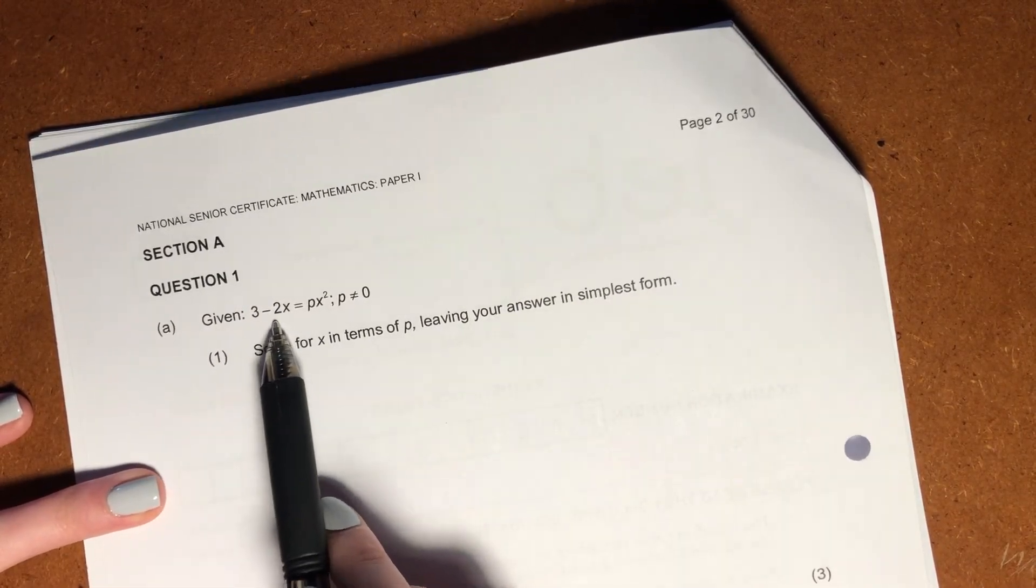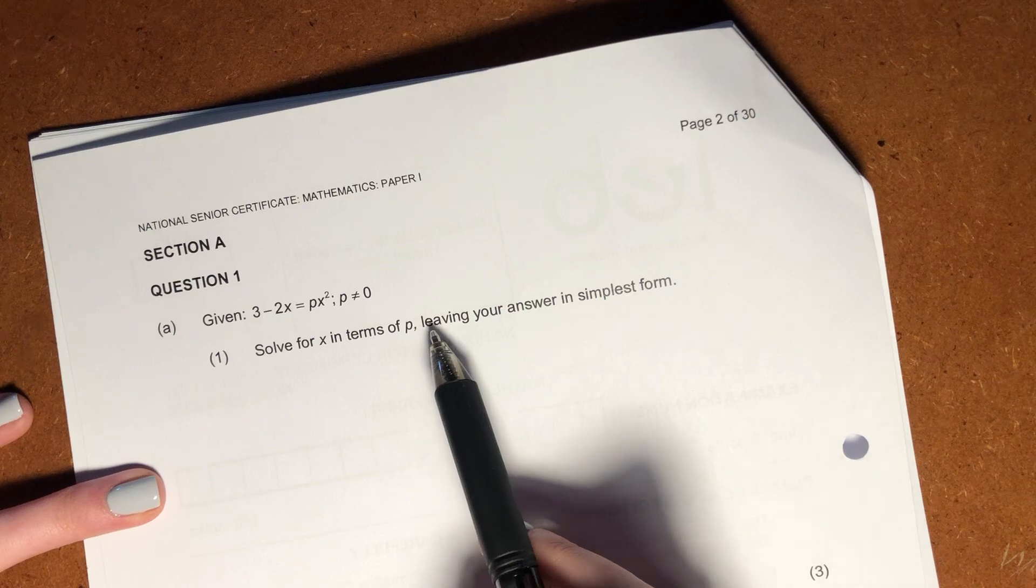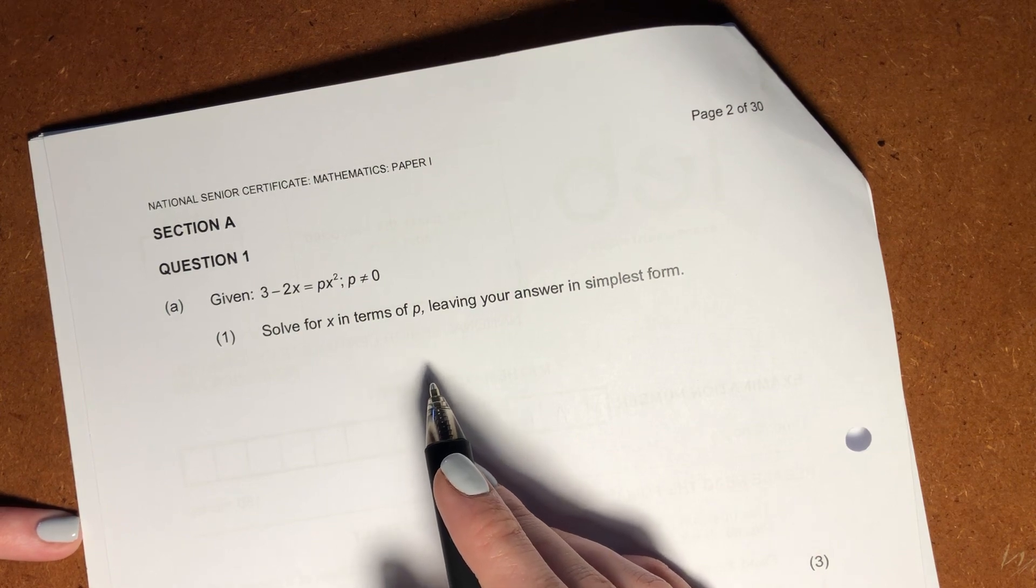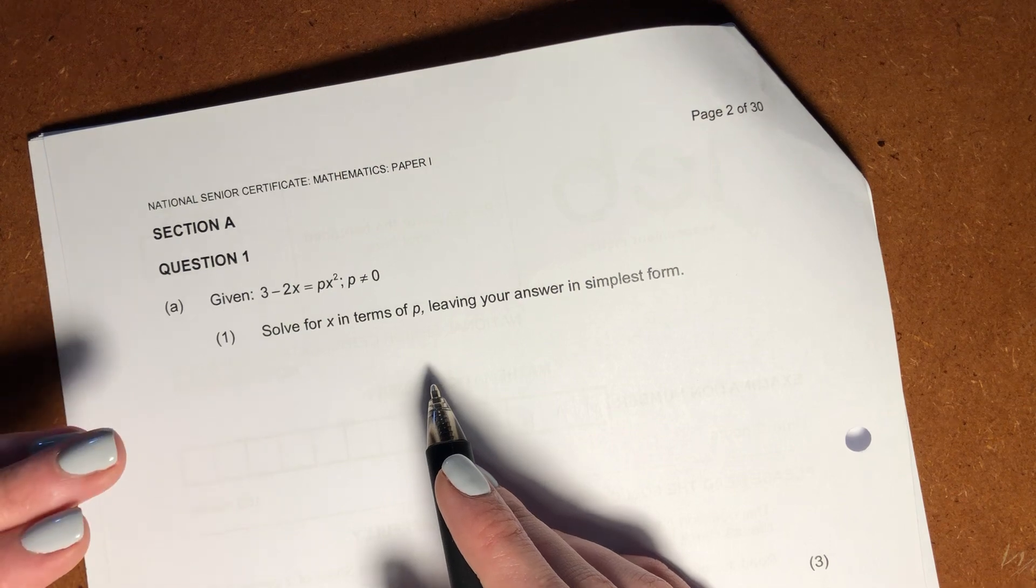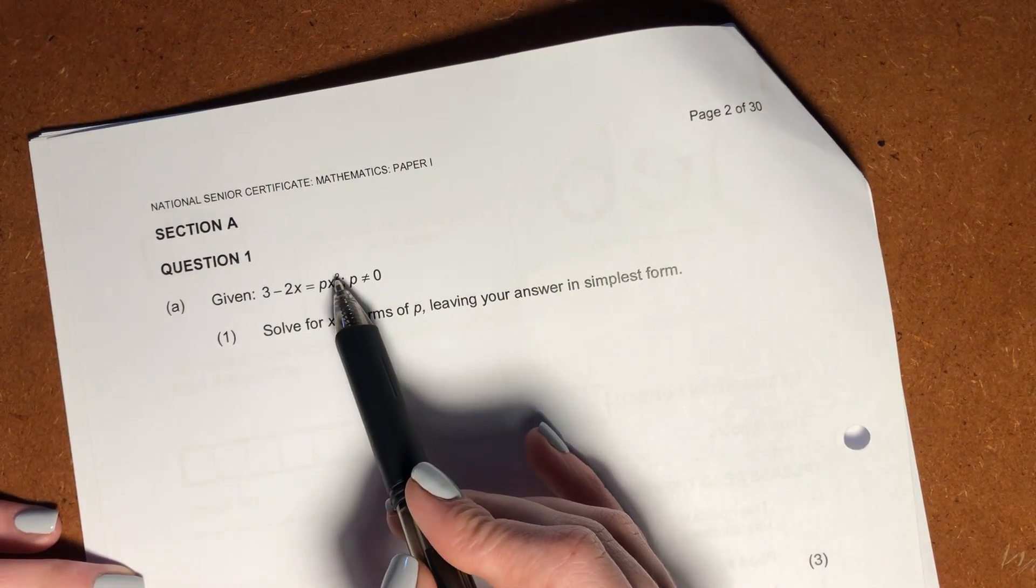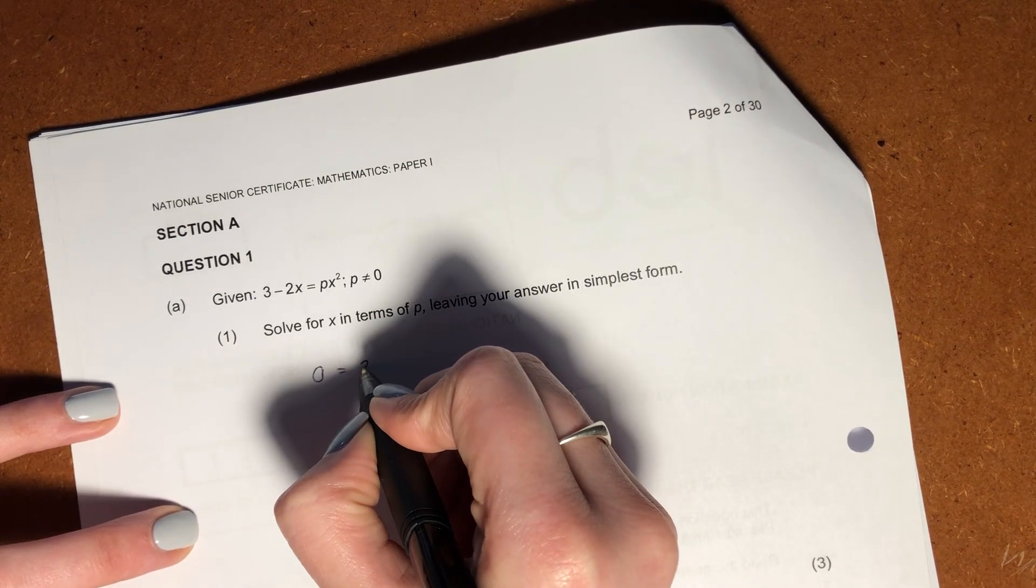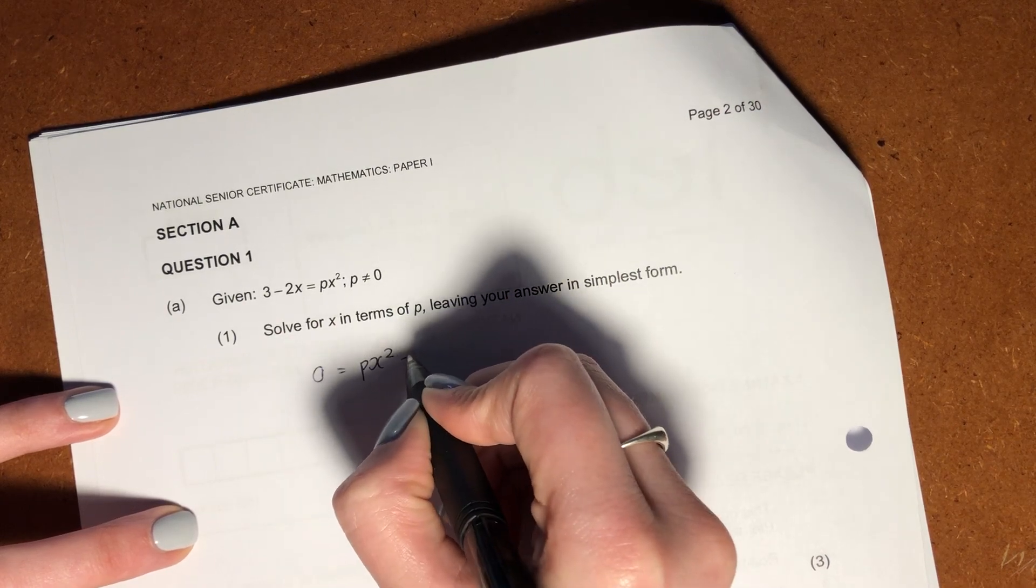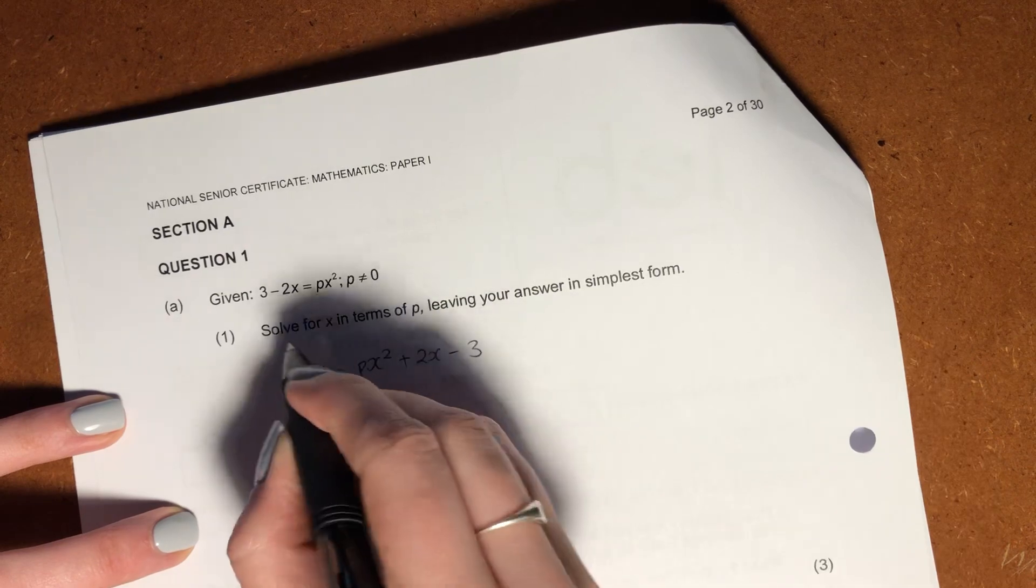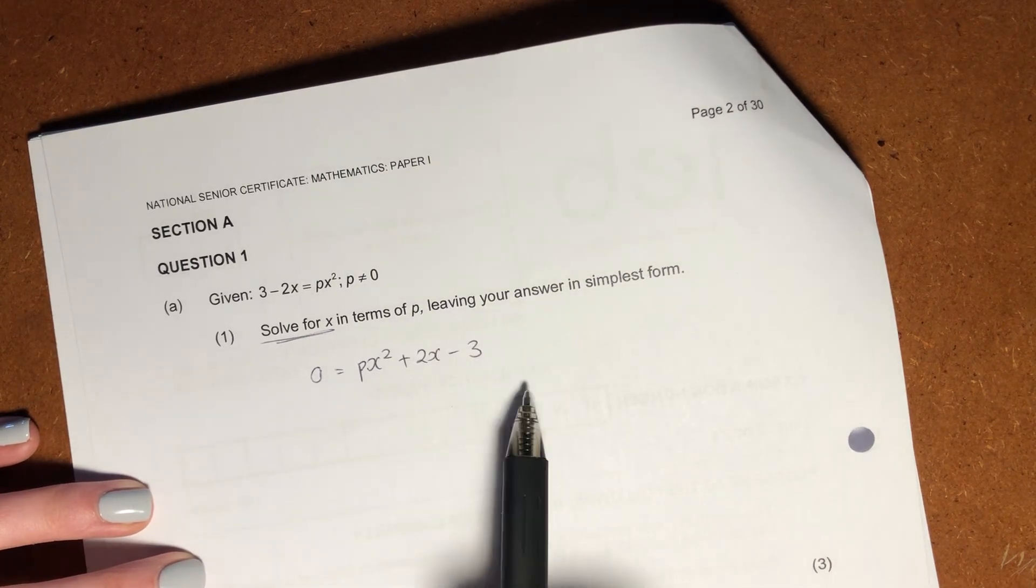So here it says, given that 3 minus 2x equals px squared, where p is not 0, solve for x in terms of p, leaving your answer in simplest form. Now what happens when students see this is they automatically switch off because now they're like, oh there's two variables, what the heck am I doing? What you need to do is you need to say, okay let me go back to my basics. I know that when there's an x squared in an equation, I know that that means that I'm looking at a quadratic. So let me just go make this equal to 0, and keep it in sort of a quadratic form and let's see whether we can work with it that way. The reason being is that you make it equal to 0, we know that when we're solving for x that's generally what we're going to do.